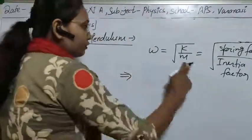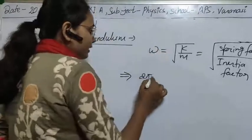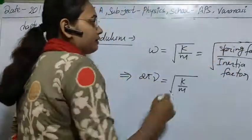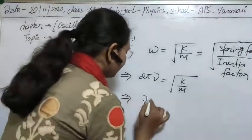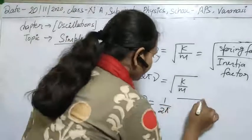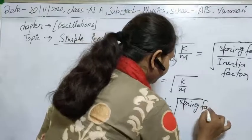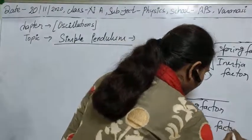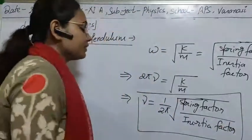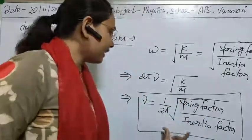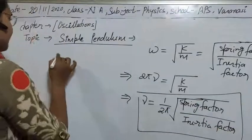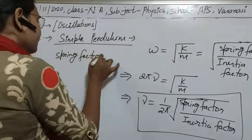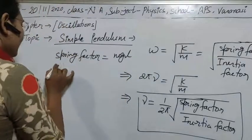To calculate the frequency of oscillation, the angular frequency omega equals 2π times nu, and that equals the square root of the spring factor divided by the inertia factor. With this we can calculate the frequency once we know the spring factor and inertia factor, which we have already determined for the simple pendulum. The spring factor equals mgl.